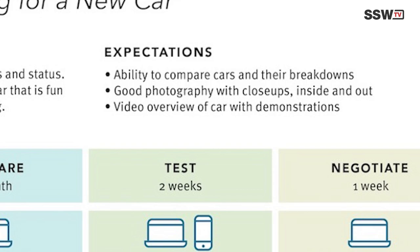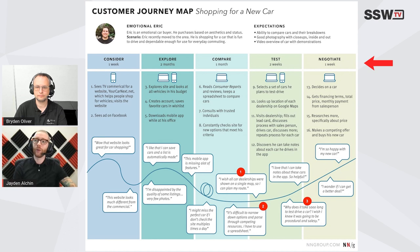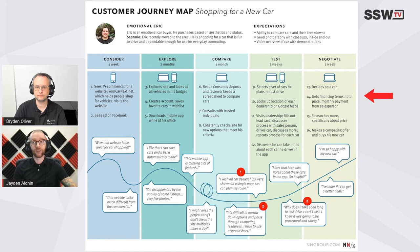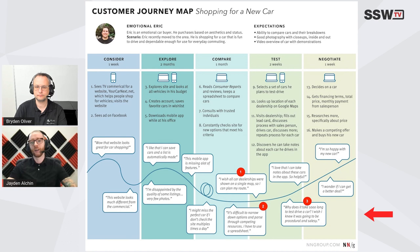Below the persona is where the map proper begins. We have the customer stages at the top: consider, explore, compare, test, and negotiate. Below that we have the customer actions or steps — what are they doing during each of these stages. Then below that, what are they thinking or feeling, and you can also see an emotional curve visually representing the ups and downs of the journey.